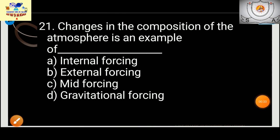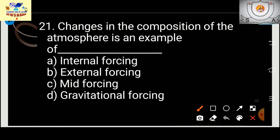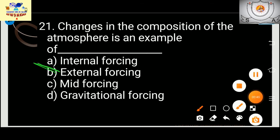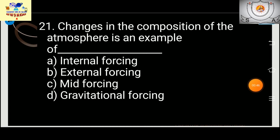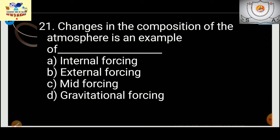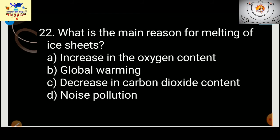Change in the composition of the atmosphere is an example of what? This change has been happening for a long time — it is due to radiative forces, which are external forces. Radiative forces mean the incoming and interacting of light from outside. So the answer is external forcing.